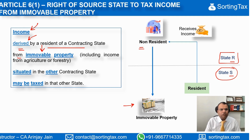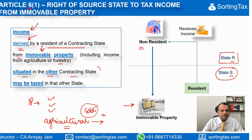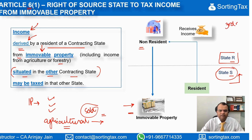This includes income from agriculture or forestry. There may be an immovable property in the source state with some agricultural produce on it, and when this agricultural produce is sold, even that income will be taxable under Article 6. Importantly, before the right to tax can be invoked by State S, they must ensure that the immovable property is situated in that contracting state. If the immovable property is in a third state or in the state of residence, then the state of source does not have any right to tax such income from immovable property.